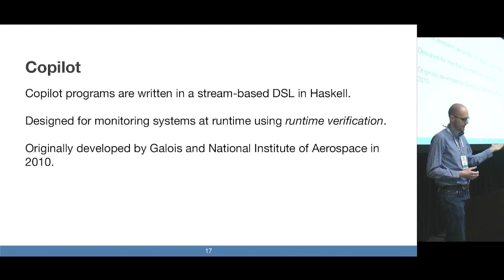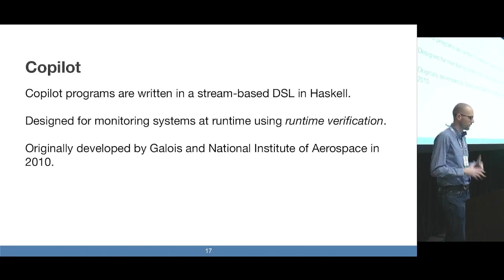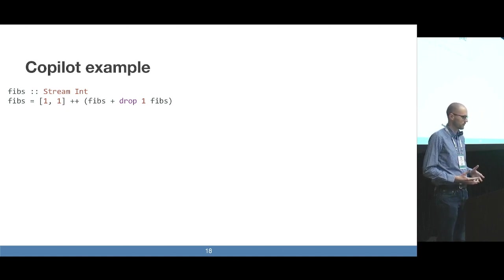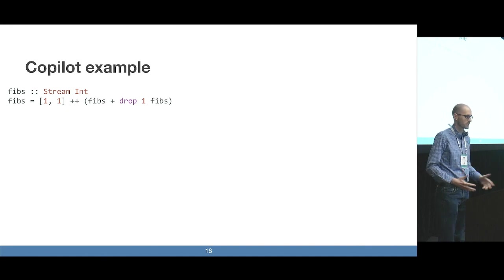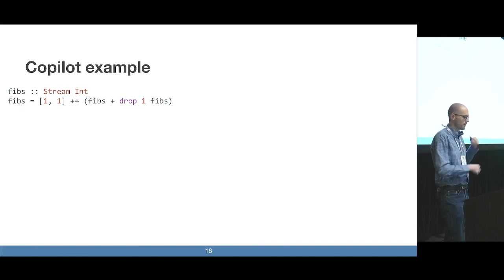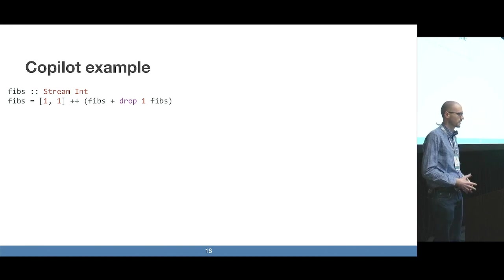The basic unit of computation in a Copilot program is a stream. Here we define the Fibonacci number stream — this Fibs definition is defined in terms of itself, which is intentional because these are infinite streams, and each element in the stream represents some moment in time. Starting at time step one, you'd have the Fibonacci number one, and then as you advance time you get larger and larger Fibonacci numbers: one, two, three, five, eight, and so on.